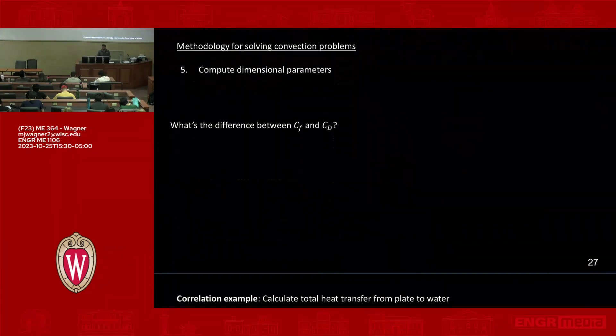One last step here is computing the dimensional parameters. That just means we're going to use these relationships. H bar is equal to Nusselt bar times K over L or whatever it is. Q dot is, for example, H bar times As times (Ts minus T infinity). So you're taking the Nusselt number that you're evaluating and then going backward to get the dimensional value. For shear stress, that might be tau is equal to CF times rho U infinity squared over 2. And then remembering that force is equal to shear stress times As. So it's just going back to something that's useful that's dimensional.